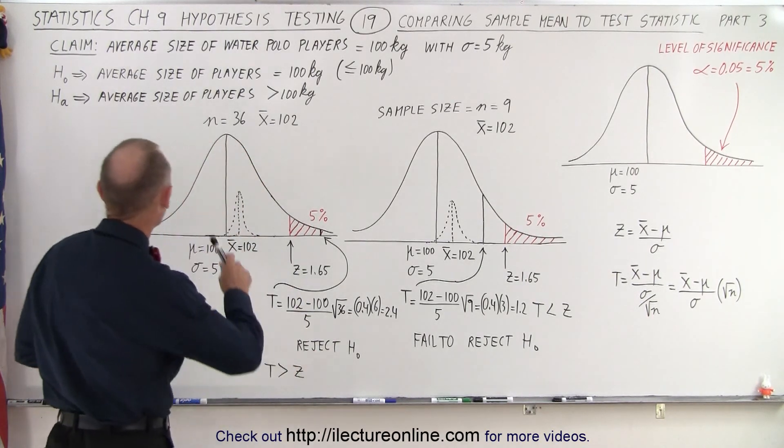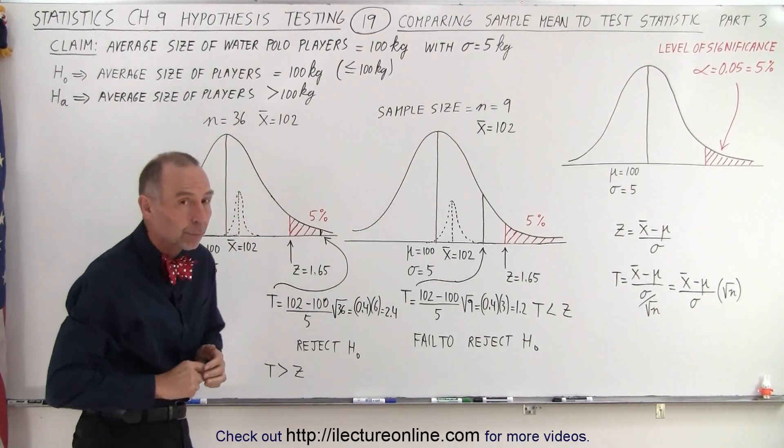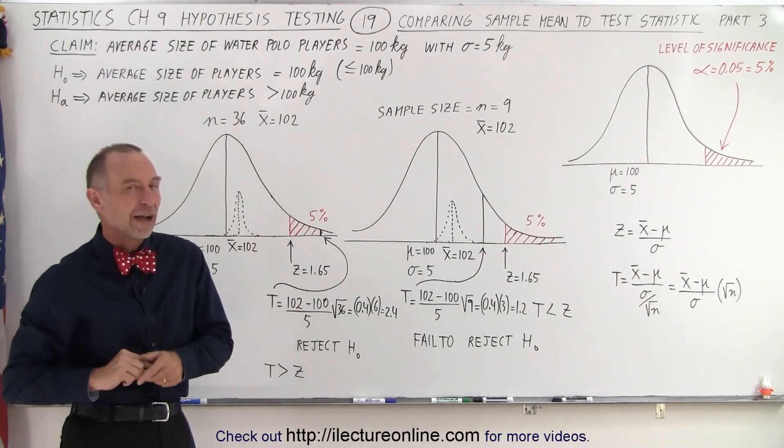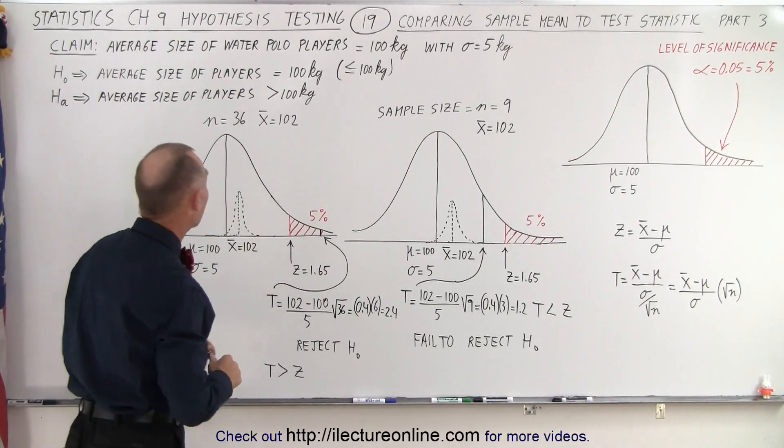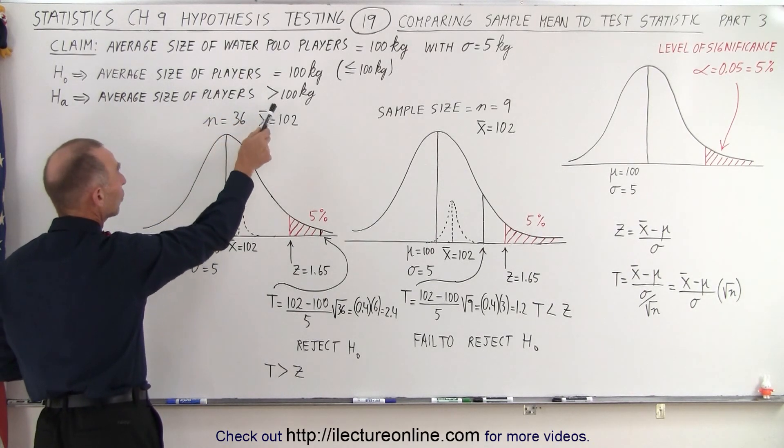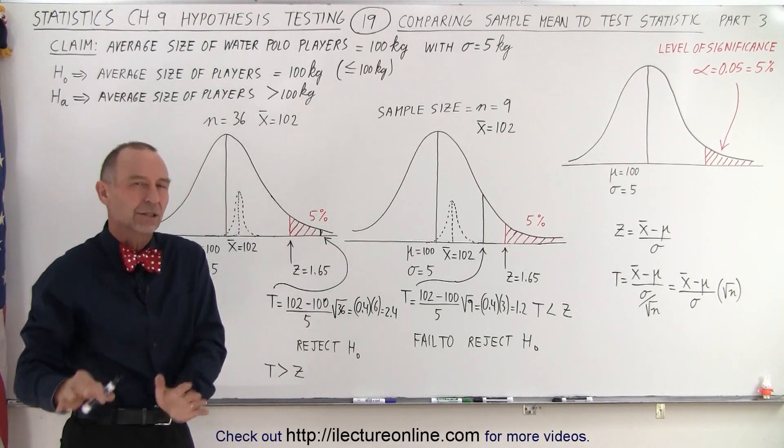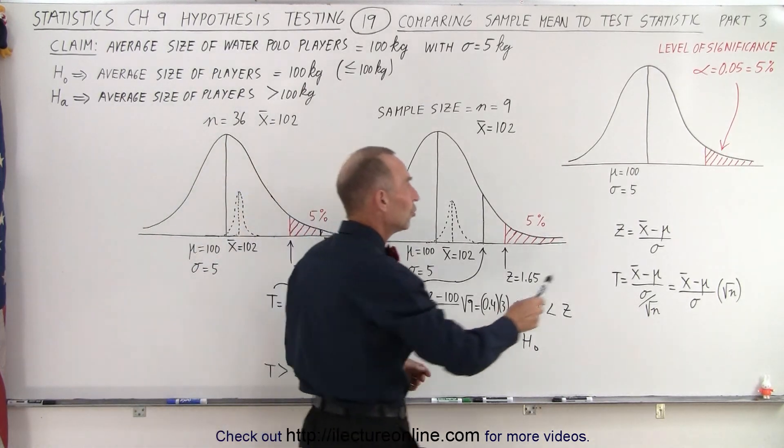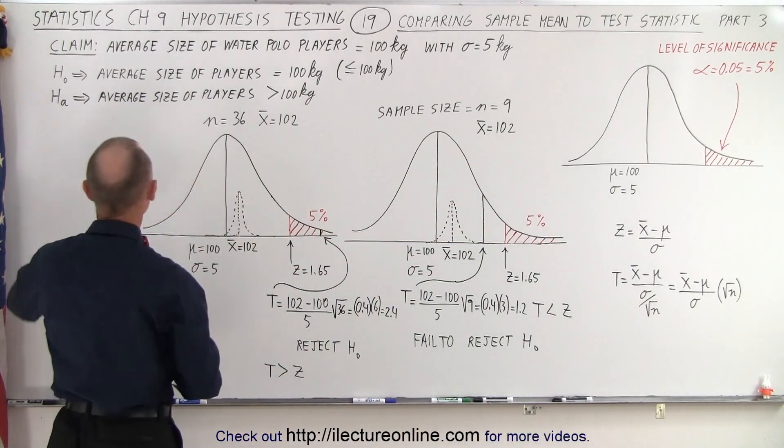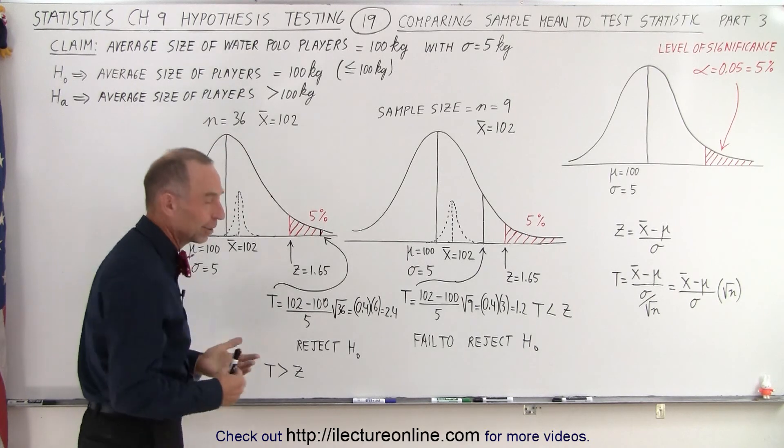Our example involved water polo players and the claim was that the average size of water polo players was equal to 100 kilograms with a standard deviation of 5 kilograms. The null hypothesis claimed that the average size of players was equal to 100 kilograms, which essentially meant equal to or less than 100 kilograms because we're using a one-tailed test. The alternate hypothesis is that the average size of players is greater than 100 kilograms.